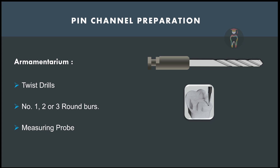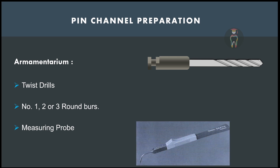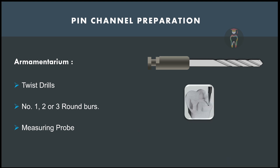For pin channel preparation, the following armamentarium is needed: twist drills (numbers 1, 2, or 3), round burs, and a measuring probe. First, a round bur is used to prepare a small punch cut at the intended pin location. Then a twist drill in a slow-speed handpiece is used for preparing the pin channel.